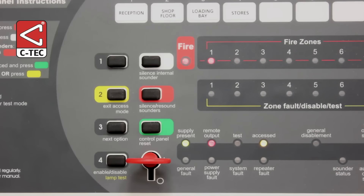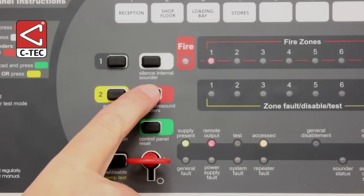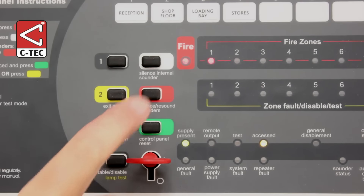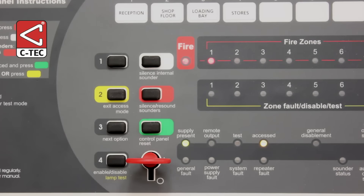Next, press the Silence/Resound Sounders button. The alarm sounders and panel's internal beeper will stop sounding, and its red general fire and relevant zonal indicators will be lit steady.